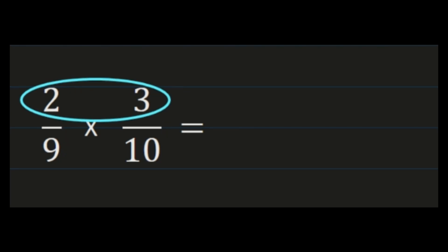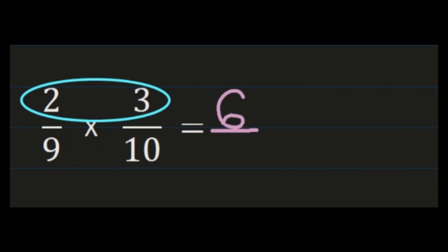Now we're going to look at our denominators, 9 and 10. We're going to multiply 9 times 10. 9 times 10 is 90, and 90 will become our denominator in our product.